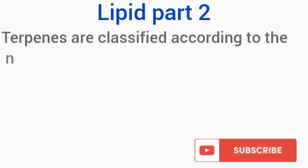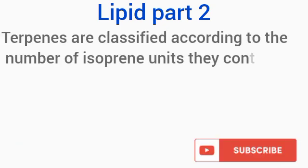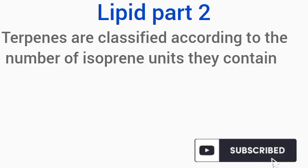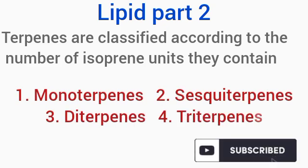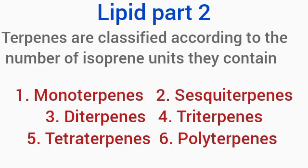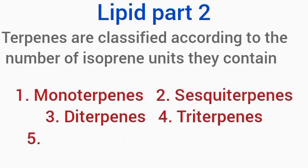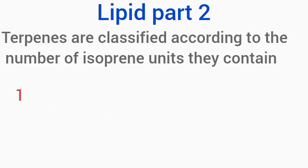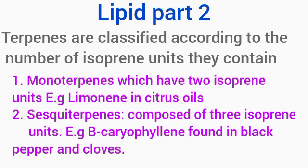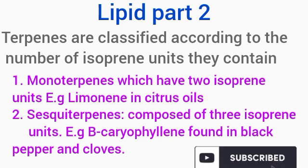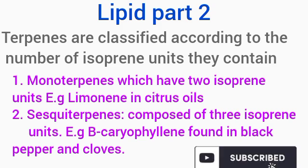Terpenes are classified based on the number of isoprene units they contain, and they are classified into the monoterpenes, sesquiterpenes, diterpenes, triterpenes, tetraterpenes, and polyterpenes. The monoterpenes are made up of 2 isoprene units and are commonly found in some oils of plants. An example is limonene, found in citrus oil.